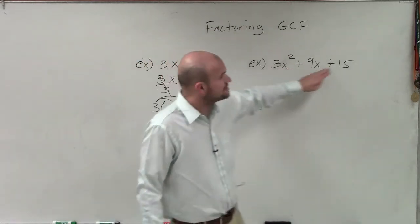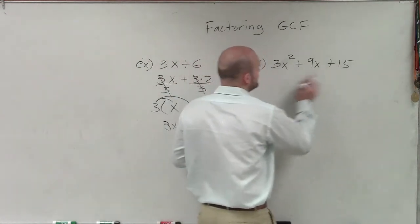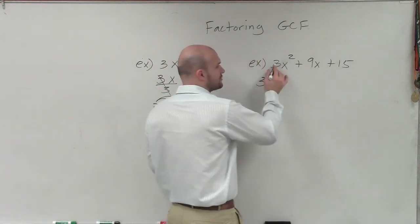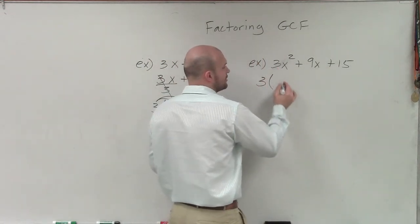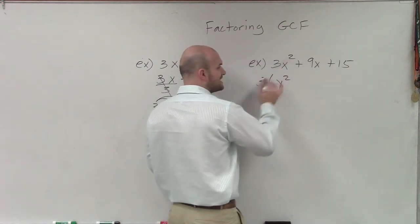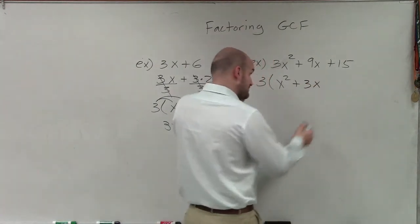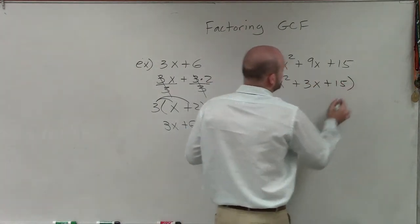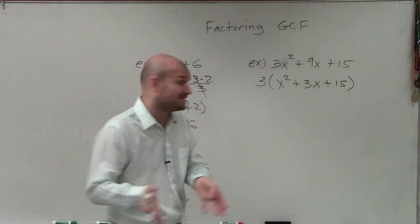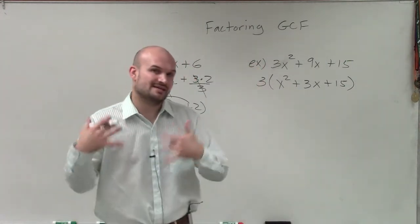So what I'll do is I'll divide each one of these terms out by 3. So 3x squared divided by 3 is just going to leave me with an x squared. 9x divided by 3 is just going to leave me with a 3x. And 15 divided by 3 is just going to leave me with a 5. Now, in terms of factoring, it's now going to make this a little bit easier for me to factor something like this once that 3 is out of there.